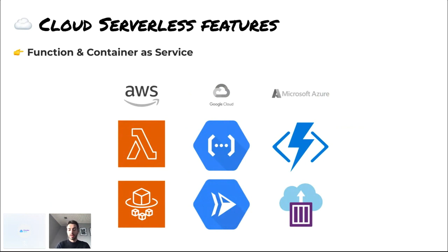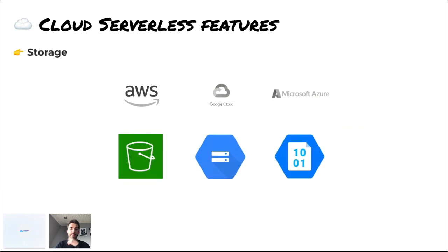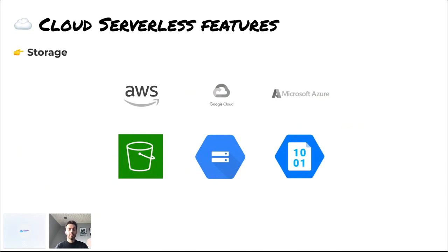The other big feature of cloud providers is storage. It's very low cost and you can upload terabytes or petabytes of data quite easily. A great feature beyond storage itself is that you can trigger things based on what you upload to your storage. For example, if you upload a file to cloud storage, you can trigger a cloud function which then does processing on that data. So it also provides event-driven triggering, which is a great capability.